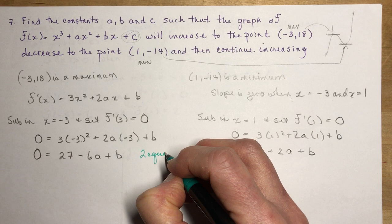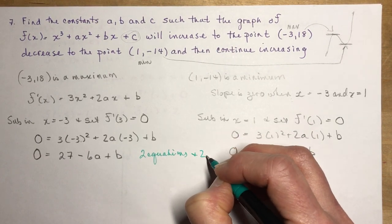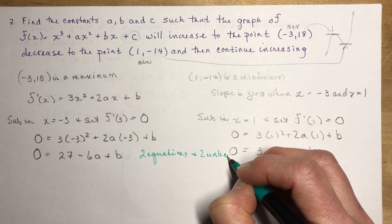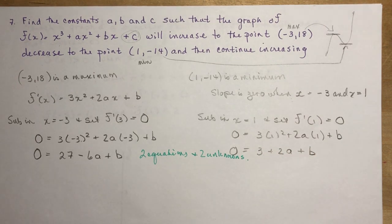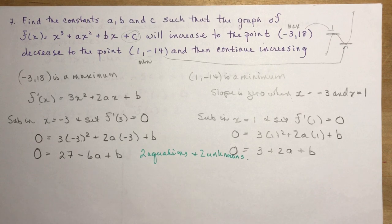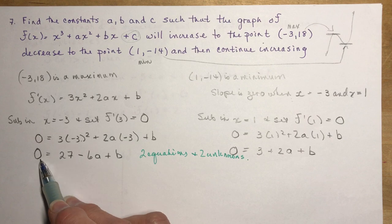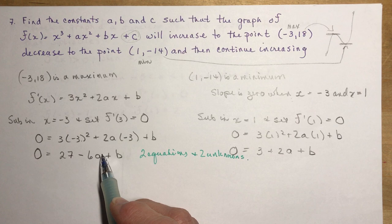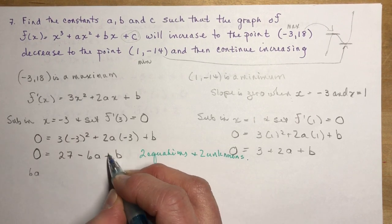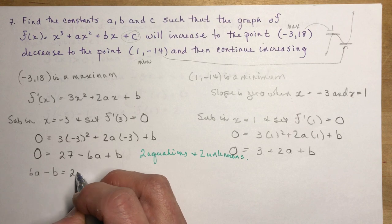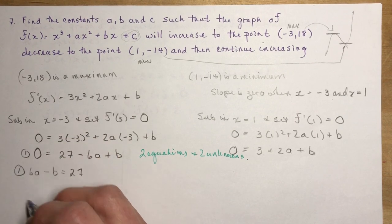So now you're going to do a little trip down memory lane back to grade 10. You have two equations and two unknowns. You did that in grade 10. You found the point of intersection by using elimination or substitution. I'm going to rearrange these equations. So 6a - b = 27, that's equation 1. And equation 2: 2a + b = -3.